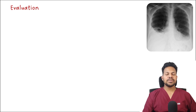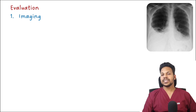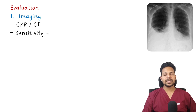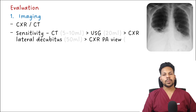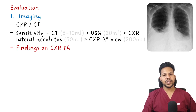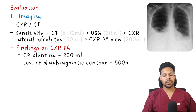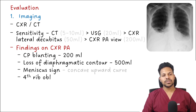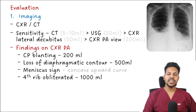For evaluation, the basic investigation is a chest X-ray or CT scan. Chest X-ray requires at least 200 ml to be recognized on PA view. CT is the most sensitive at 5–10 ml, followed by ultrasound, lateral decubitus chest X-ray, and then PA view. Chest X-ray findings: costophrenic angle blunting at 200 ml, loss of diaphragmatic contour at 500 ml, meniscus sign at larger volumes, and opacification to the fourth rib at 1000 ml.